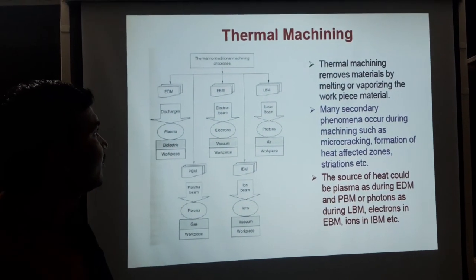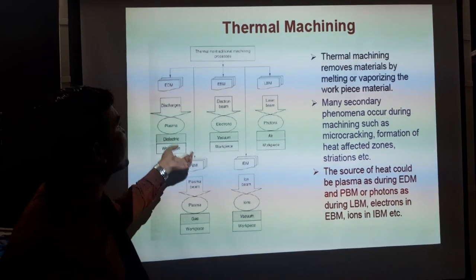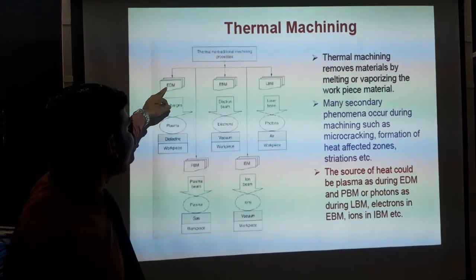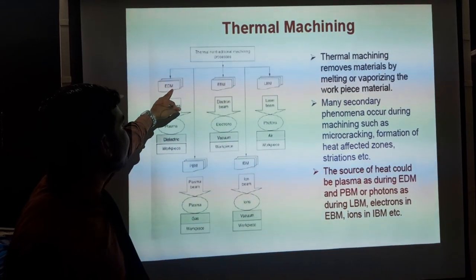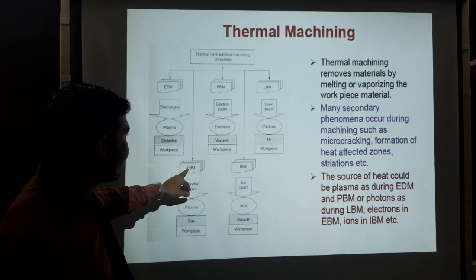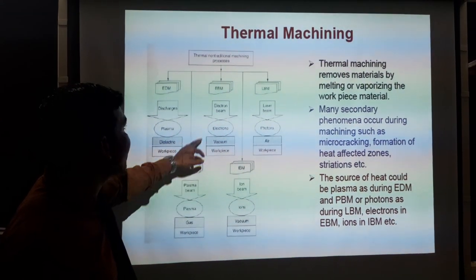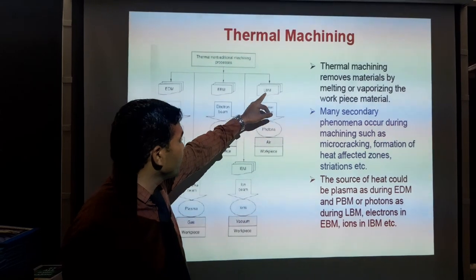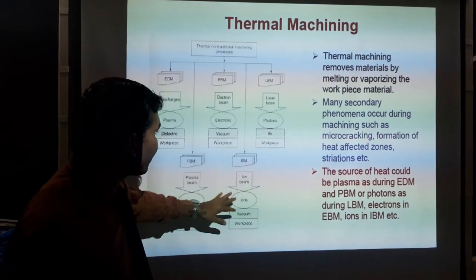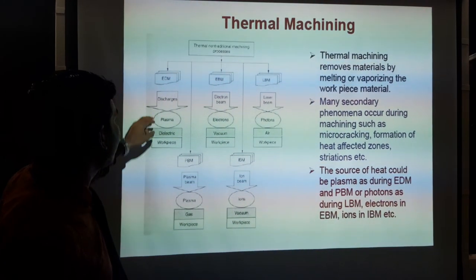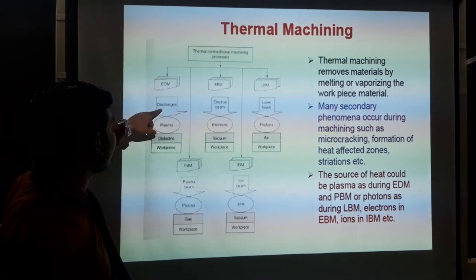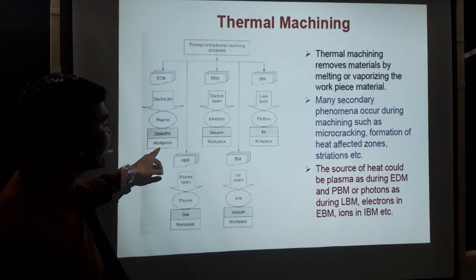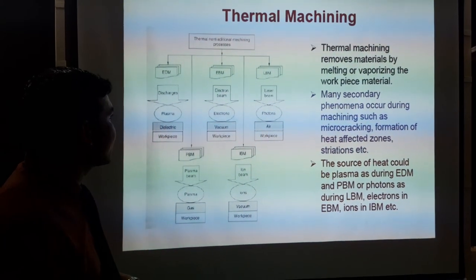Thermal machining process: thermal machining has five categories. The workplace has excess material removed. Electrical energy is converted into electrons in a vacuum condition to remove excess material.